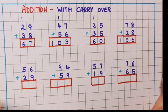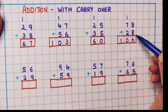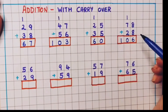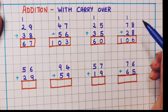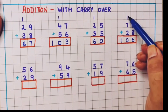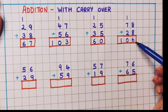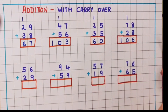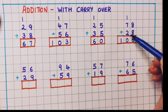I hope you are understanding this. First we have to do the addition of the ones place, and then if we get a two-digit number, the tens number will go to the tens column and the ones number will come down. And then we have to do the addition of the tens digit numbers.